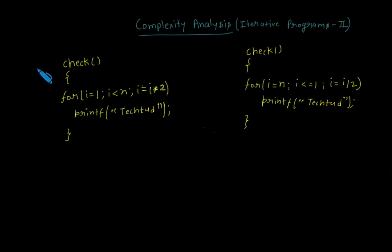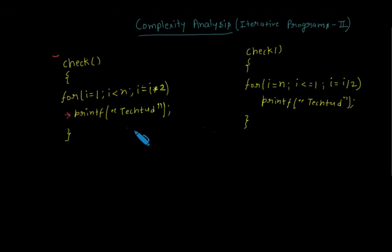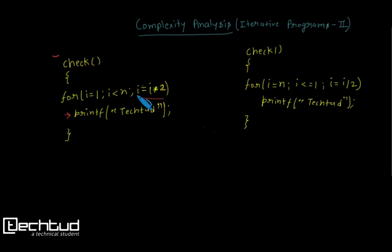Let's take the first check function. Here we have a for loop with only one statement inside it, so we need to find out how many times that statement will execute in order to get the complexity. You can see that in this for loop the value of i is getting doubled every time.